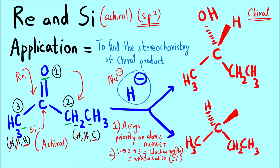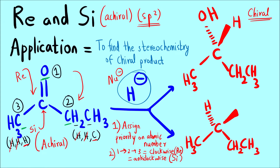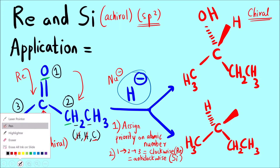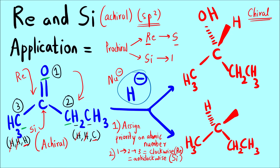Now the question is: how do we determine the stereochemistry of the product? If the prochiral center notation is re, then the product formed will be S. You can remember it as re→S, si→R. If the nucleophile attacks from the si face then the stereochemistry of the product is going to be R.